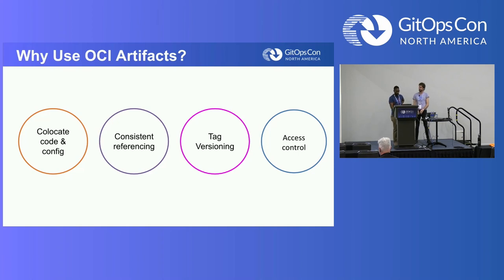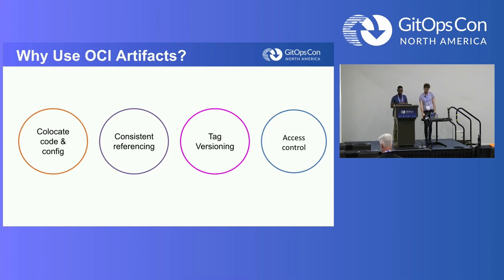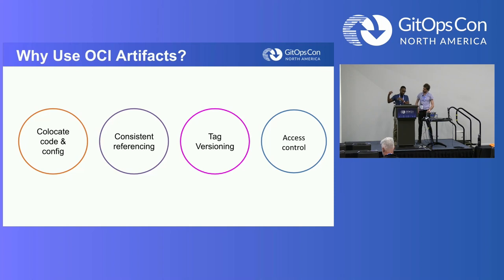Why would you use OCI artifacts? The first use case is to collocate your code with your configuration. For those who know about Flux image automation controllers, today we use this to automatically reconcile our code and application - every time we have a new version of our code, the image automation controller reconciles it into our Kubernetes cluster. With OCI artifacts configured, you can do the same thing with your configuration. You can also consistently reference your images with their digest, do tag versioning, and do access control as shown with the registries.